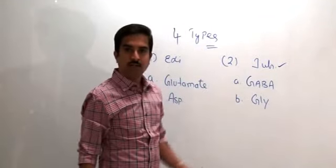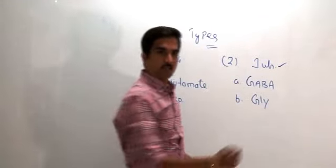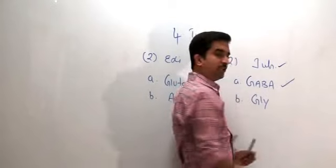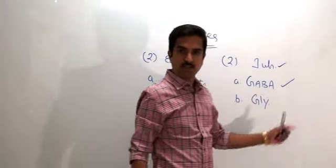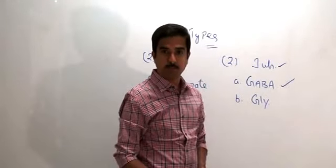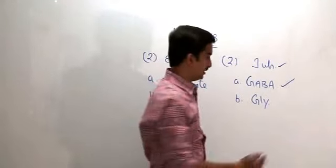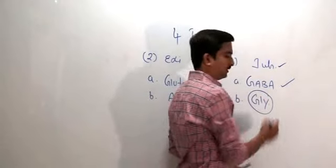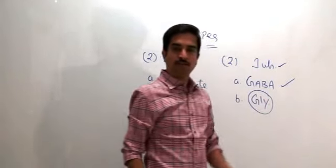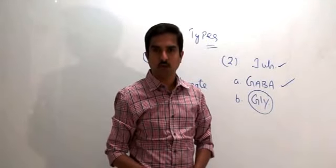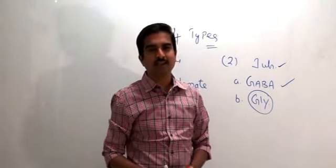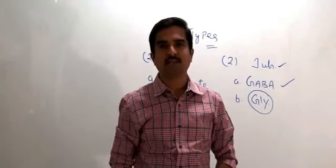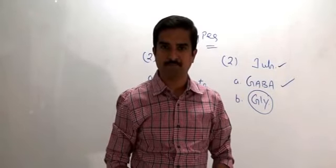GABA is the chief and main inhibitory neurotransmitter in the brain, while glycine is the chief inhibitory neurotransmitter in the spinal cord as well as in the brainstem.